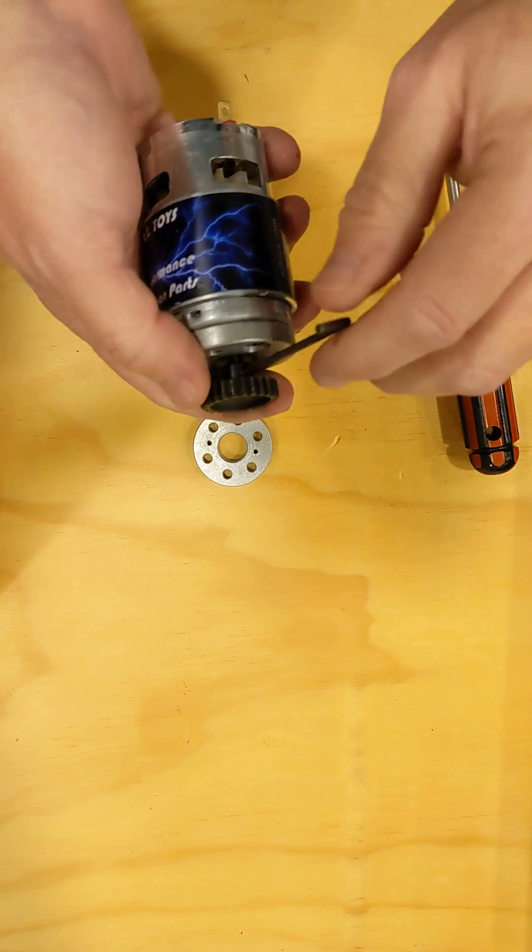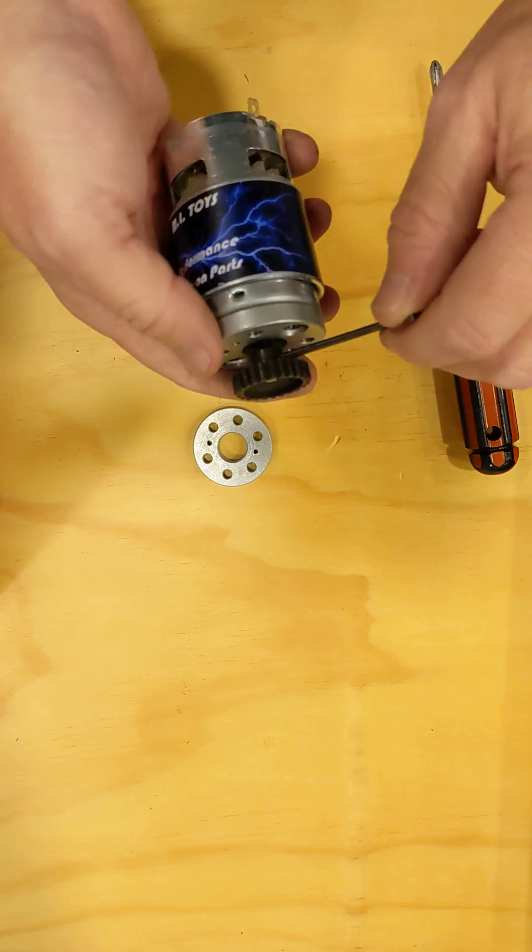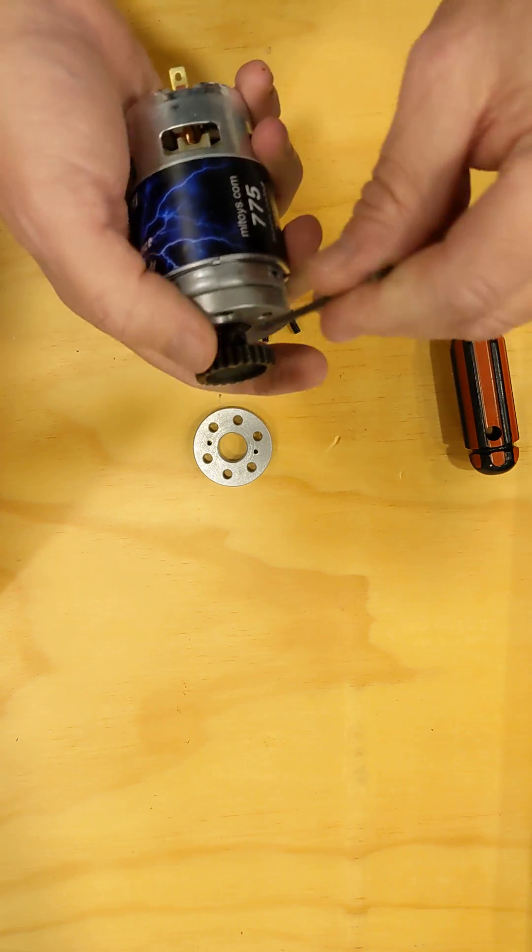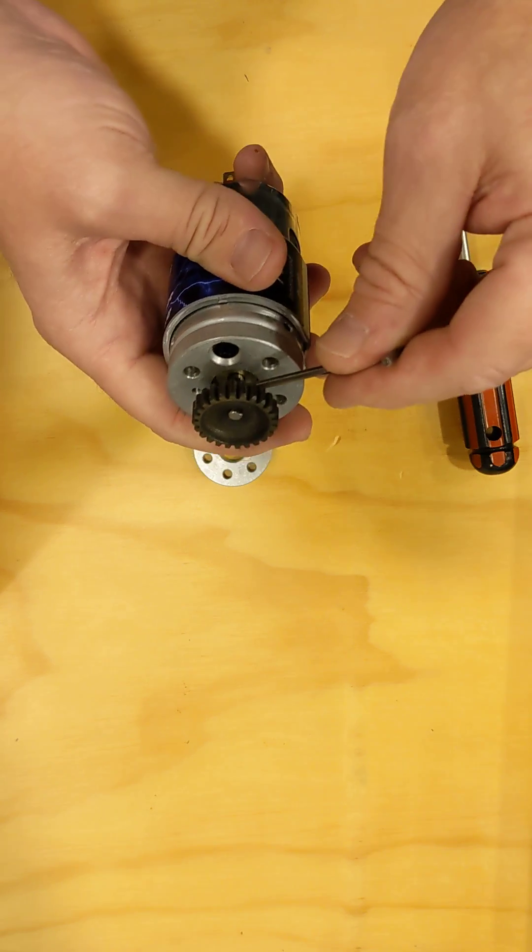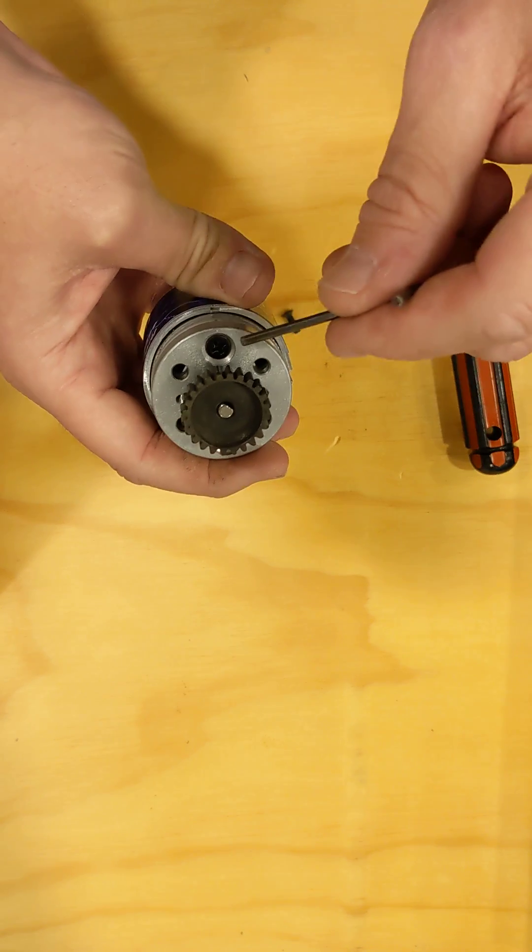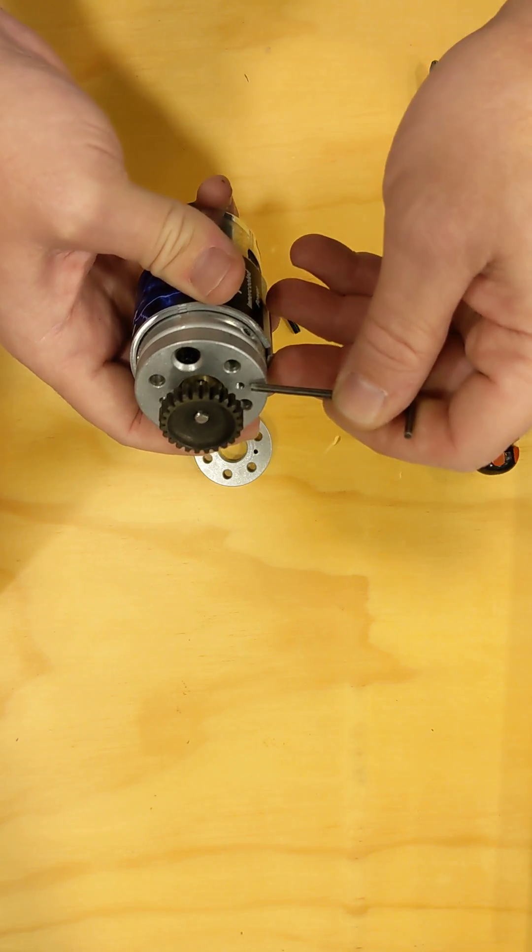Tighten it down. And again, you want to use threadlock on the set screw too. That one's really well known for backing out if it has no threadlock on it. So threadlock on the set screw, threadlock on the four millimeter screws, and threadlock on the three millimeter screws.